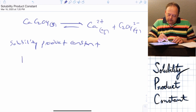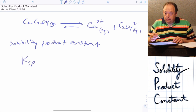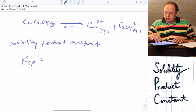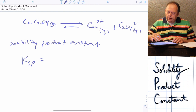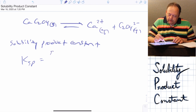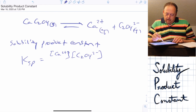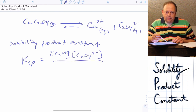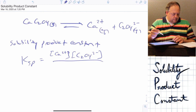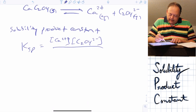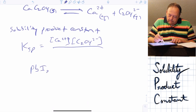In this case we call it Ksp — SP stands for solubility product constant. That equals the product concentrations divided by reactant concentrations, so concentration of calcium 2+ ions times concentration of C₂O₄²⁻ ions. We don't divide by anything because the left side of the equation is a solid, and we don't include solids in solubility product constants.